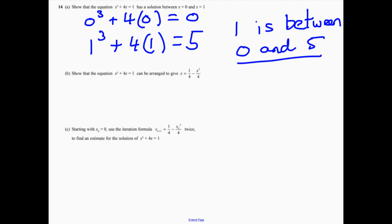Now part b, it says show that this equation can be arranged to give this over here. So let's have a little think, first of all. So again, there's kind of clues in over here in terms of where you want to go. Well, we've got a takeaway x cubed there. So let's take away x cubed from both sides first. So 4x equals 1 takeaway x cubed.